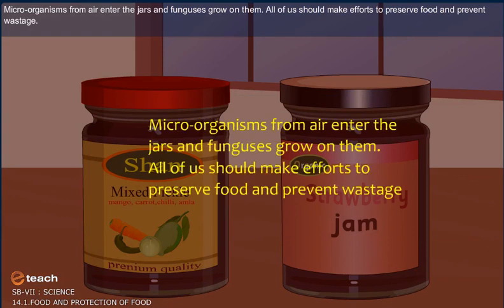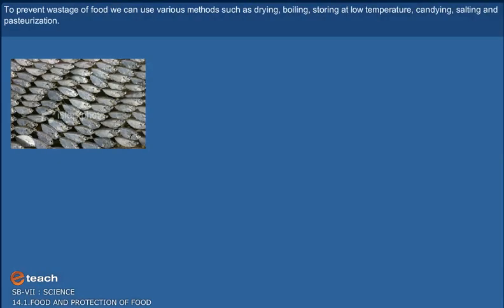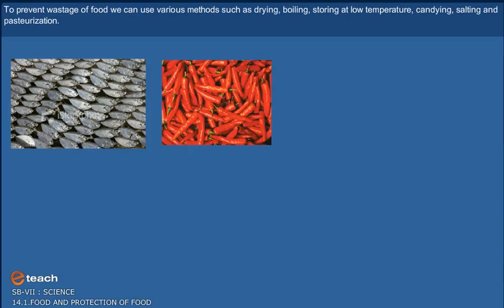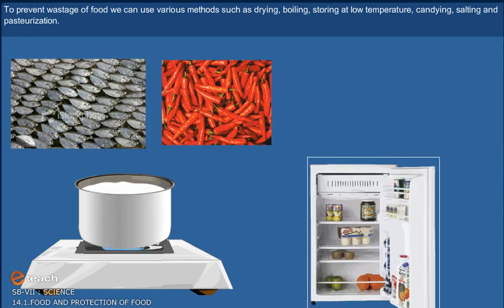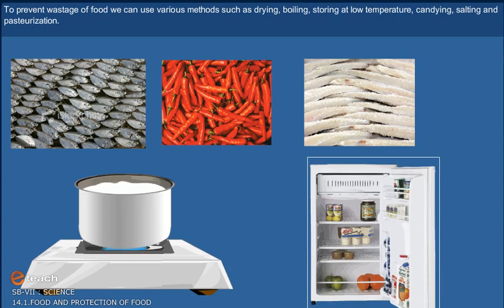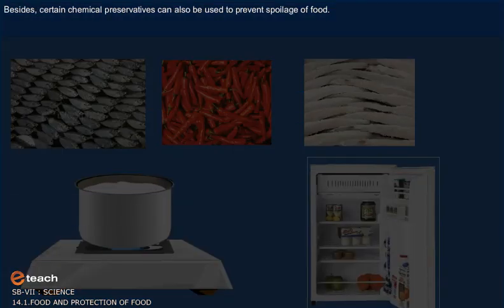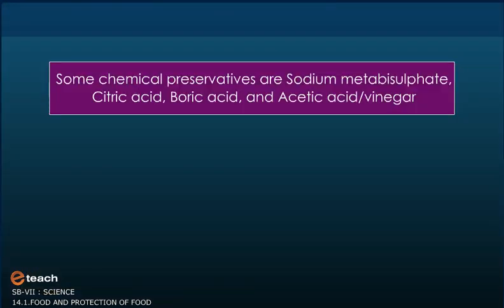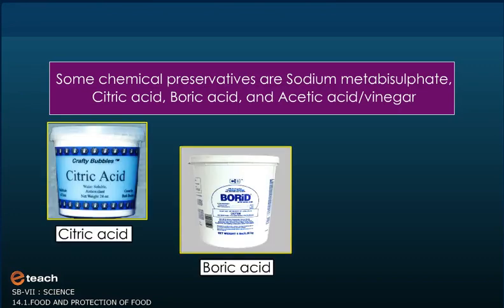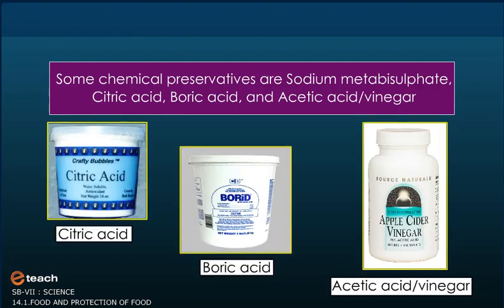All of us should make efforts to preserve food and prevent wastage. To prevent wastage of food, we can use various methods such as drying, boiling, storing at low temperature, canning, salting, and pasteurization. Besides, certain chemical preservatives can also be used to prevent spoilage of food. Some chemical preservatives are sodium metabisulfite, citric acid, boric acid, and acetic acid or vinegar.